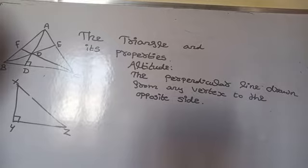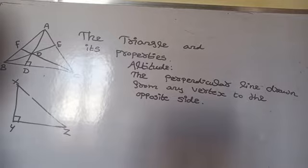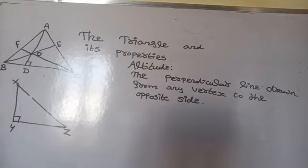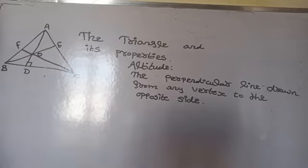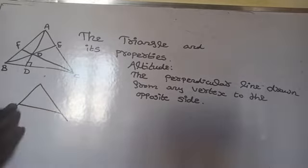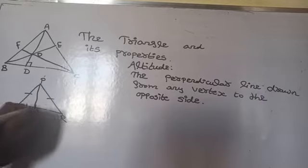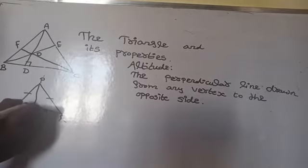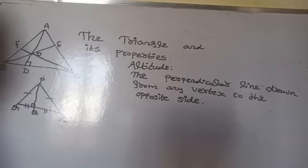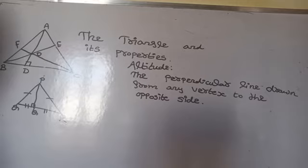Can the altitude and median be the same for a triangle? Yes — in an equilateral triangle, where all sides are equal and all angles are 60 degrees, the median acts as an altitude and the altitude acts as a median. Therefore, in an equilateral triangle, PQ is a median as well as an altitude. Tomorrow we will start Exercise 6.1. Thank you everybody.